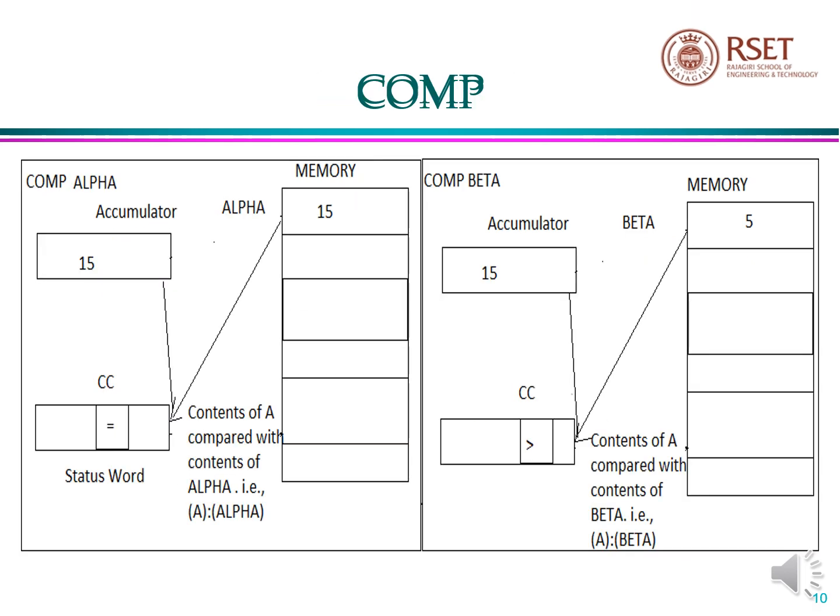Compare instruction. Let us see COMP alpha. This means the contents of accumulator is to be compared with the contents of memory location alpha. We can see that both the contents are same. Since both are same, the condition code in the status word will be set to equal to. Another example is COMP beta. Here the contents of accumulator is compared with the contents of memory location beta. We can see that contents of accumulator is greater than the contents of memory location beta. So greater than is set in the condition code of the status word.